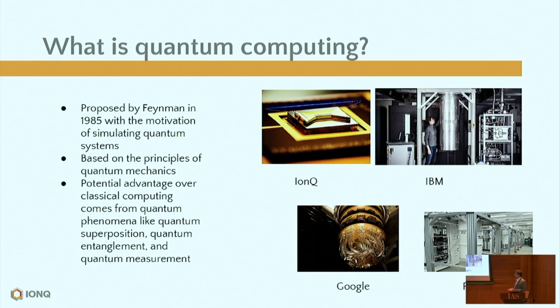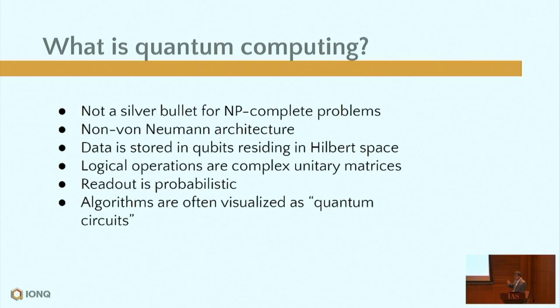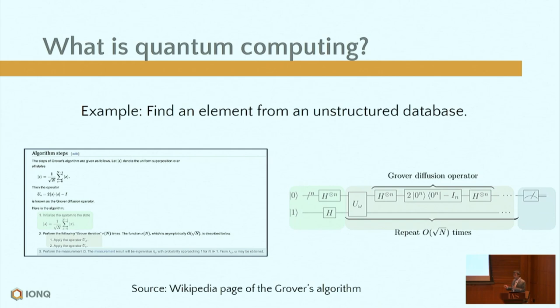The potential algorithmic advantage comes from quantum superposition, entanglement, and measurement — phenomena with no classical analog. It is not a silver bullet for NP-complete problems. The hardware is non-von Neumann architecture. Input data is encoded in a Hilbert space — a complex vector space. Logical operations are unitary matrices. Readout is probabilistic, meaning you have to run the same algorithm multiple times to get the result. Algorithms are often visualized as quantum circuits.